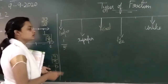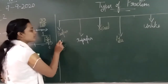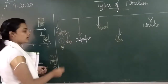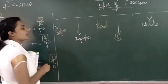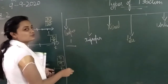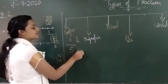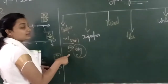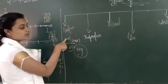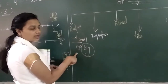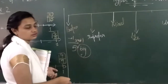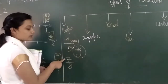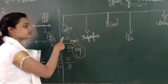First one is proper fraction. In a proper fraction, my numerator should be small and my denominator should be big. My numerator should be smaller than my denominator. That type of fraction is called a proper fraction. For example, is this a proper fraction? Yes, it is, because my numerator is smaller than my denominator. So it is a proper fraction.